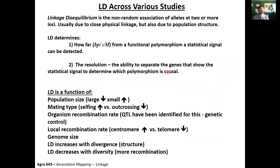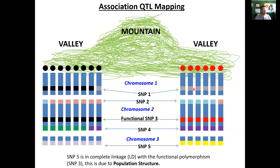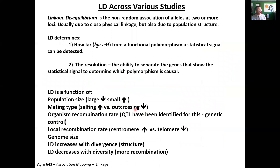Sometimes association mapping is going to fail. Population structure is one big consideration. The other is linkage disequilibrium — the non-random association of alleles at two or more loci. Going back to this example, most loci across the genome are going to show a very strong or complete LD, which undermines how far from a functional polymorphism a statistical signal can be detected.